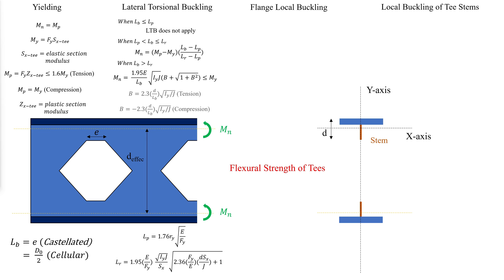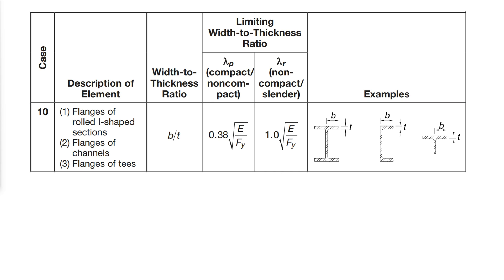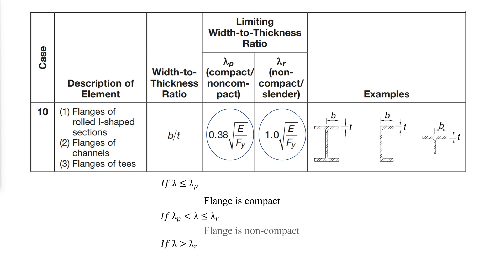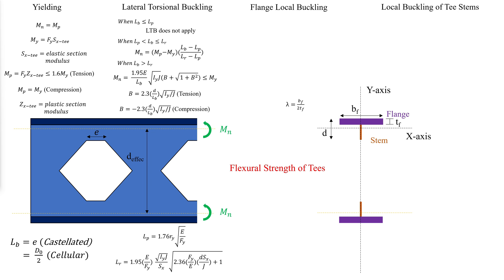B has different signs depending on whether the stem is in tension or compression. For flange local buckling, we need to check the limiting slenderness values for the flange from AISC specification table B4.1B. The slenderness is compared to the limit values to determine whether the flange is compact, non-compact, or slender. If the flange is compact, the limit of flange local buckling does not apply. If the flange is non-compact, the minimum of two values is taken. If the flange is slender, the bending strength is calculated as follows.